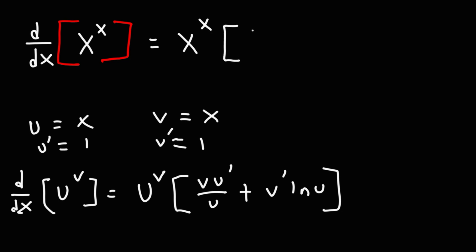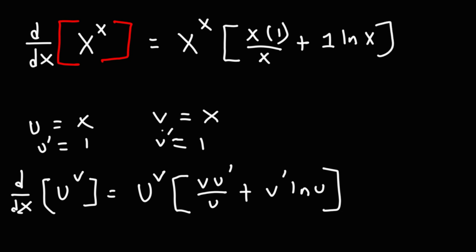Then v, which is x, times u prime, which is 1, divided by u, which is x, plus v prime, which is 1, times ln u, where u is x. So x over x is just 1. So the answer is x raised to the x, times 1 plus ln x.